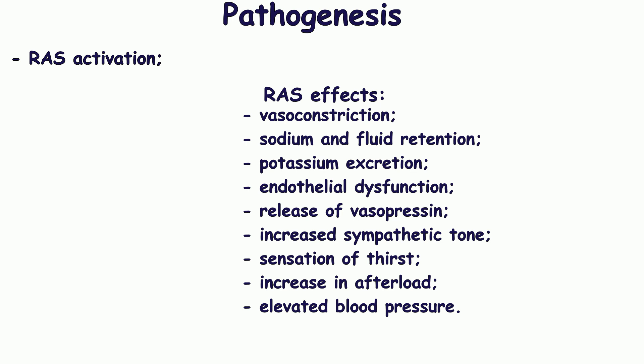Angiotensin-2 is the strongest vasoconstrictive factor. Besides its direct vasoconstrictive effect, it causes aldosterone release in the adrenal cortex, leading to sodium and fluid retention, potassium excretion, and impaired endothelial cell function. Angiotensin-2 also causes the release of vasopressin, which promotes water reabsorption in the kidneys and has vasoconstrictive effects, and enhances the sensation of thirst. Angiotensin-2 stimulates sodium-hydrogen exchangers, increasing sodium reabsorption. All these mechanisms lead to increased blood volume and vascular tone, resulting in elevated blood pressure.